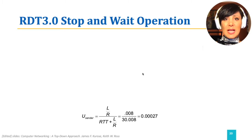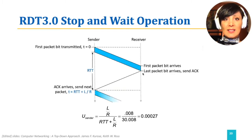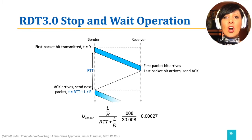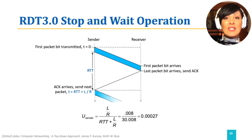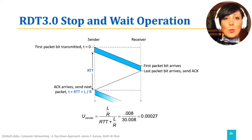For example, if we start at time 0 with sending a packet with length L that takes L over R to send, the sender has to wait RTT after that time to be able to use another L over R seconds to send. We are sending one packet and waiting a whole RTT for the acknowledgement to be received.